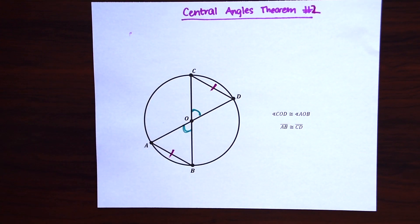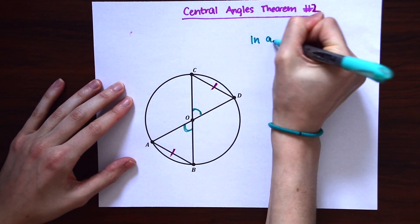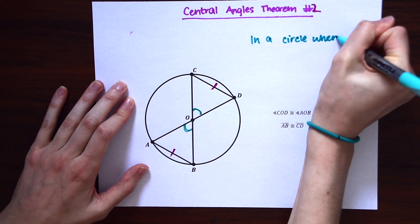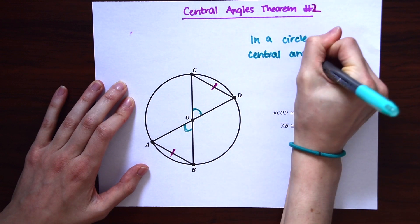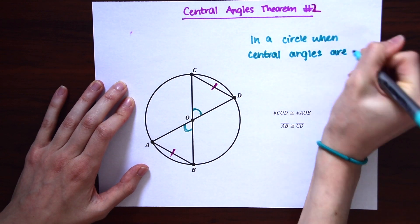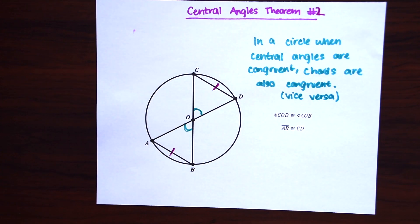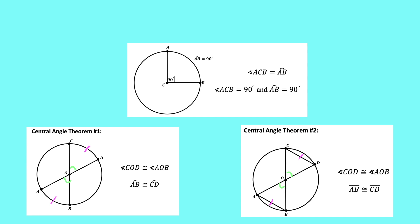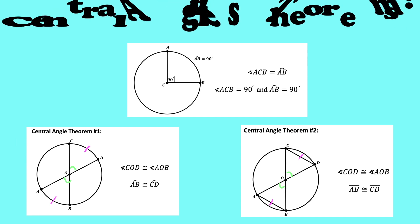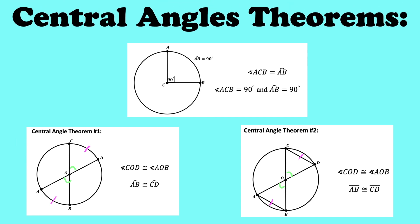So let's write this out again in plain English. So now it says in a circle when central angles are congruent, chords are also congruent and vice versa. And the vice versa applies to that last theorem we just looked at as well. So take a look at this next slide here. If there's anything that you missed, here are our central angle theorems that we just went over.